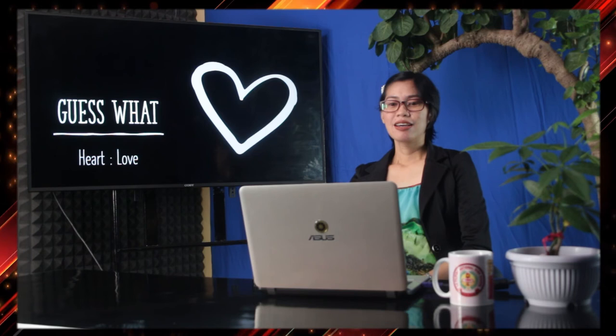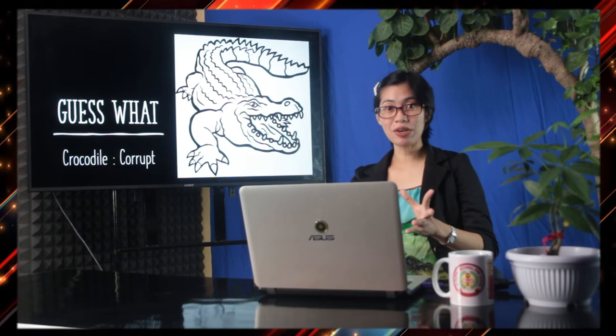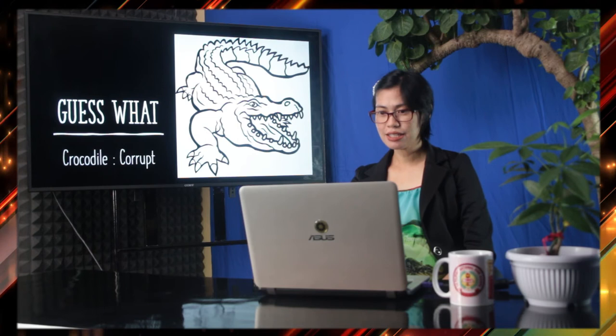Let's assess if we had the right answers for the possible representations of the objects shown. First, dog — did you get it? It's peace. How about the second one? Heart — yes, love. It's a very common symbol for love, and Valentine's Day just passed. Next, crocodile — it represents a corrupt or opportunist individual. So in your editorial cartoon, if you want to represent someone corrupt, you could use a crocodile.